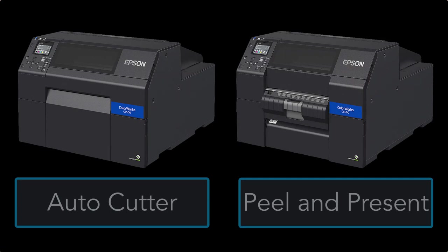Now let's talk about the two models, the auto cut version and the peel and present version. The auto cutter, it is the most versatile. You'll be able to put in continuous labels. You'll be able to put in die cut labels and the machine will cut them off to where you want, if you want them to cut.